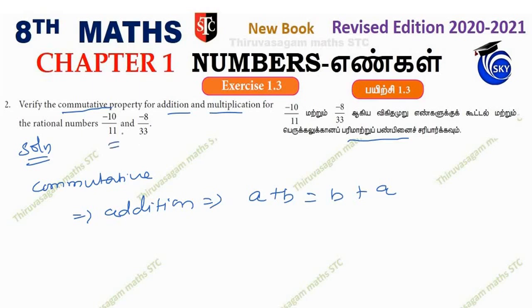So first, minus 10 by 11 plus minus 8 by 33. When we add this for commutative property, we need to take the common denominator. The common denominator is 33.